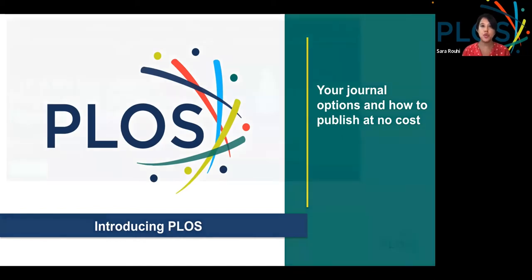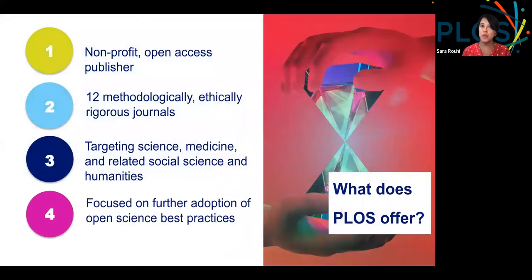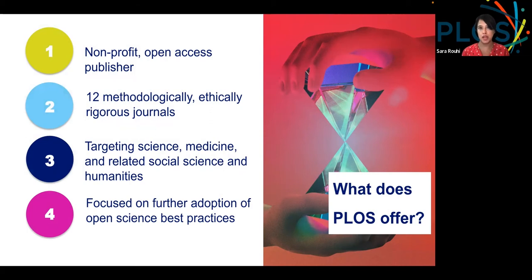At PLOS, we're an open access publisher dedicated to breaking boundaries and empowering research through furthering open science. We're open access and nonprofit, featuring 12 methodologically and ethically rigorous journals targeting science, medicine, related social sciences, and humanities, and we're focused on furthering the adoption of open science best practices through our journal communities.